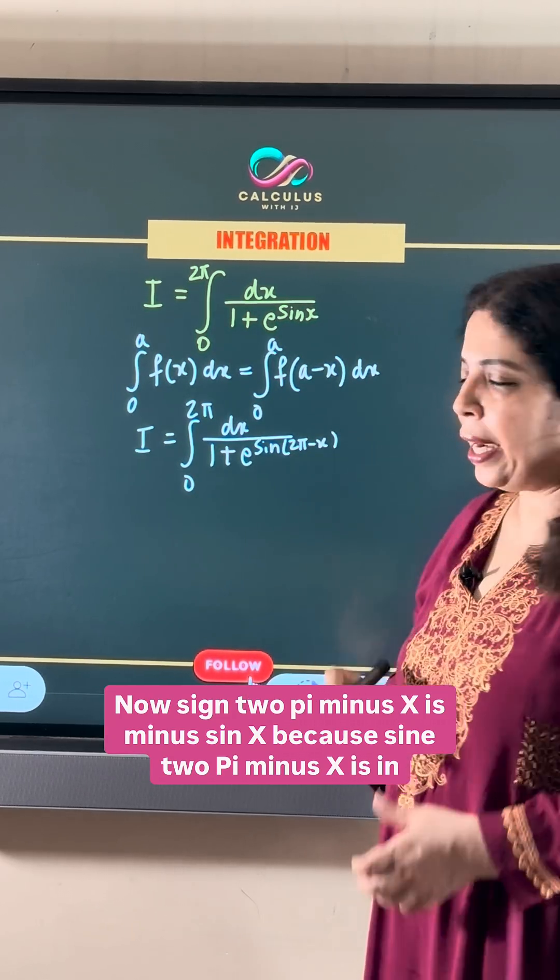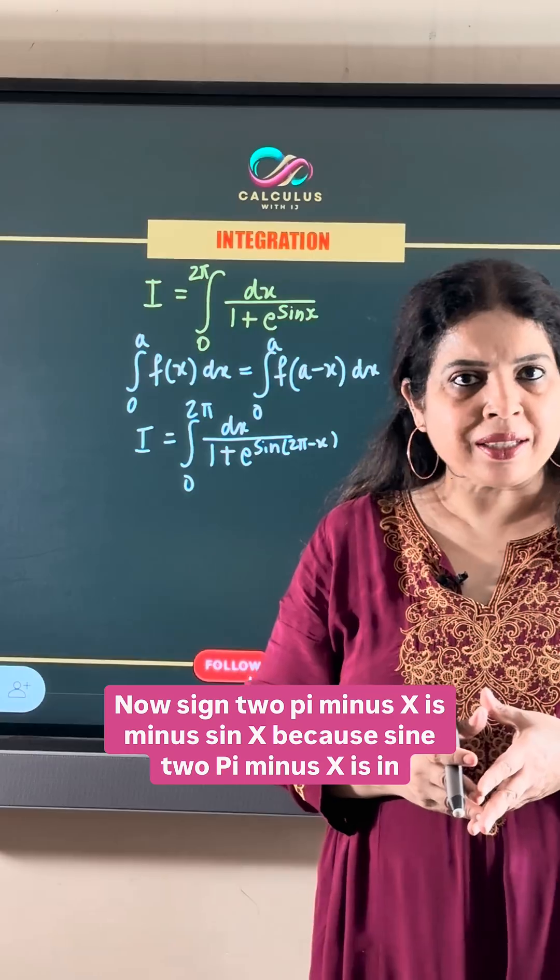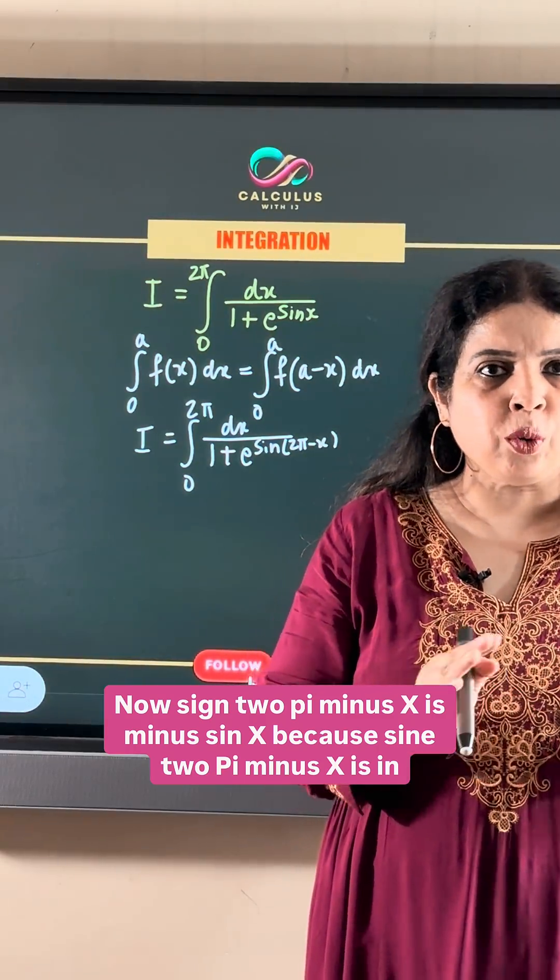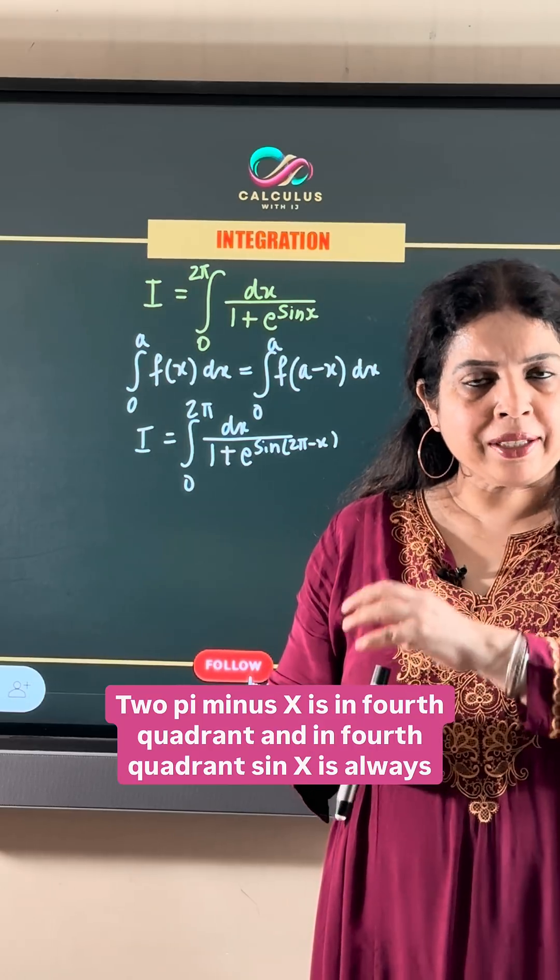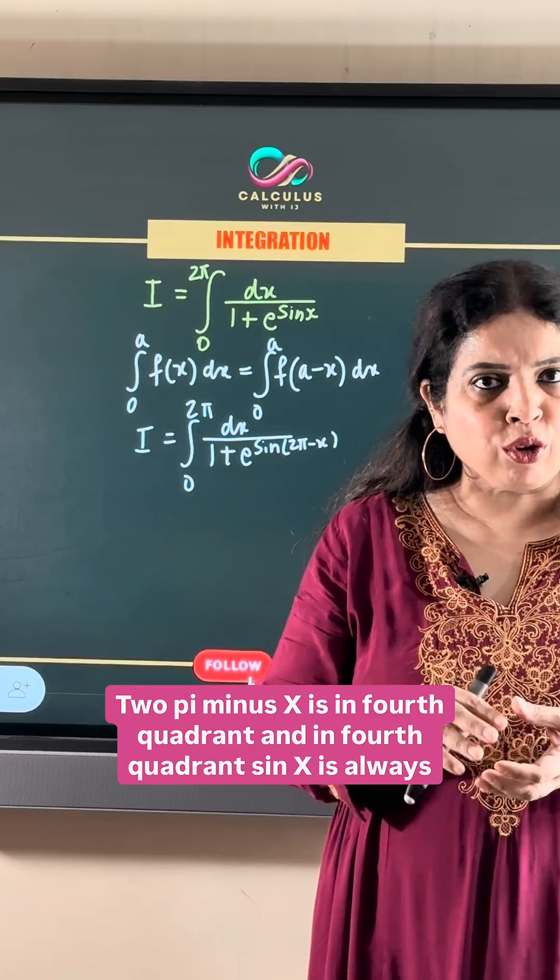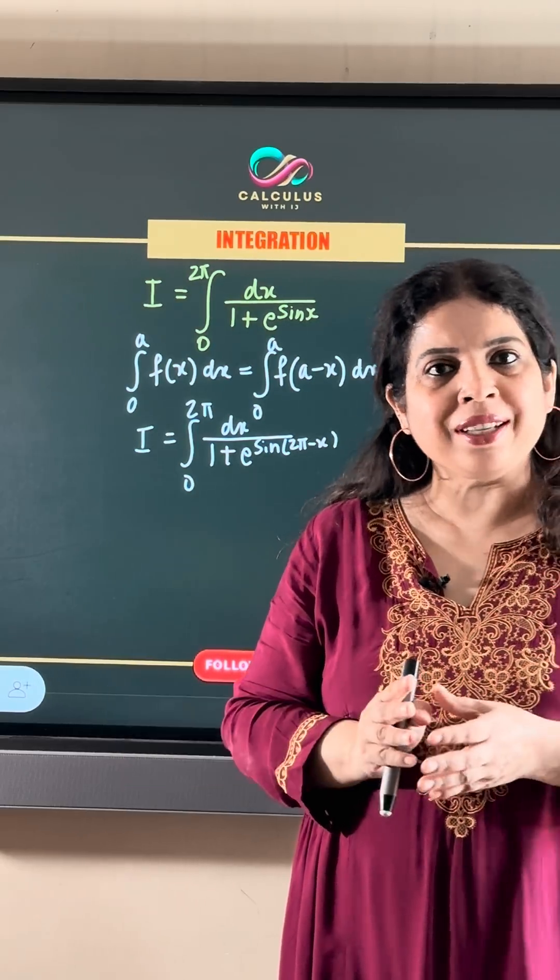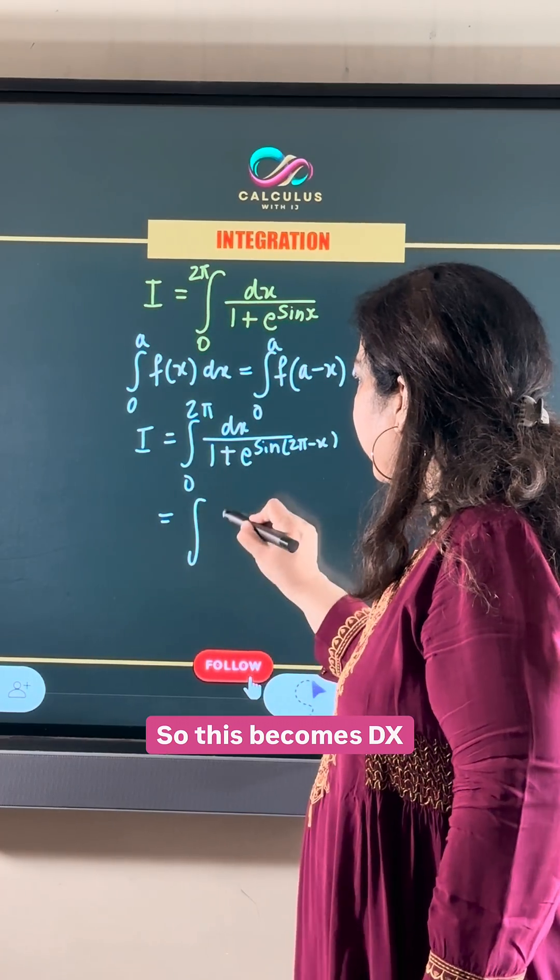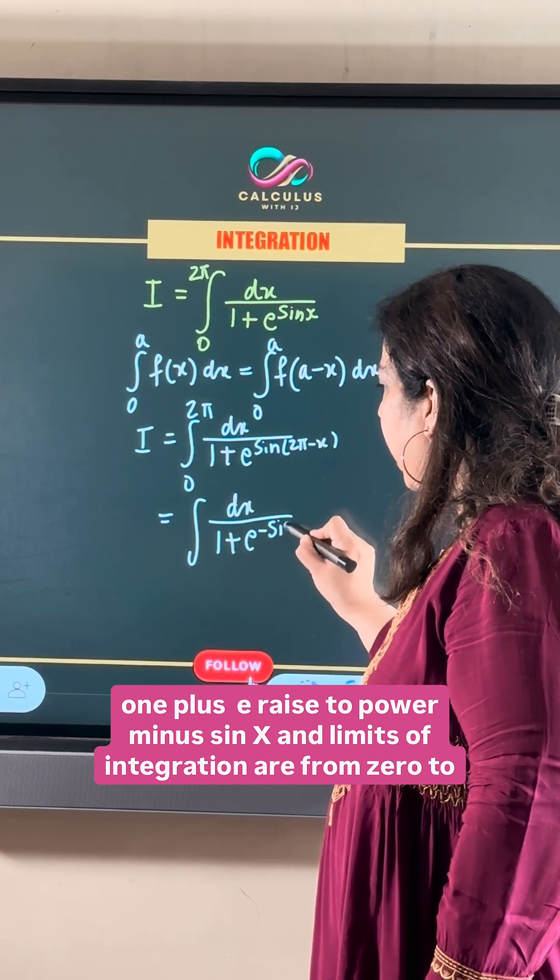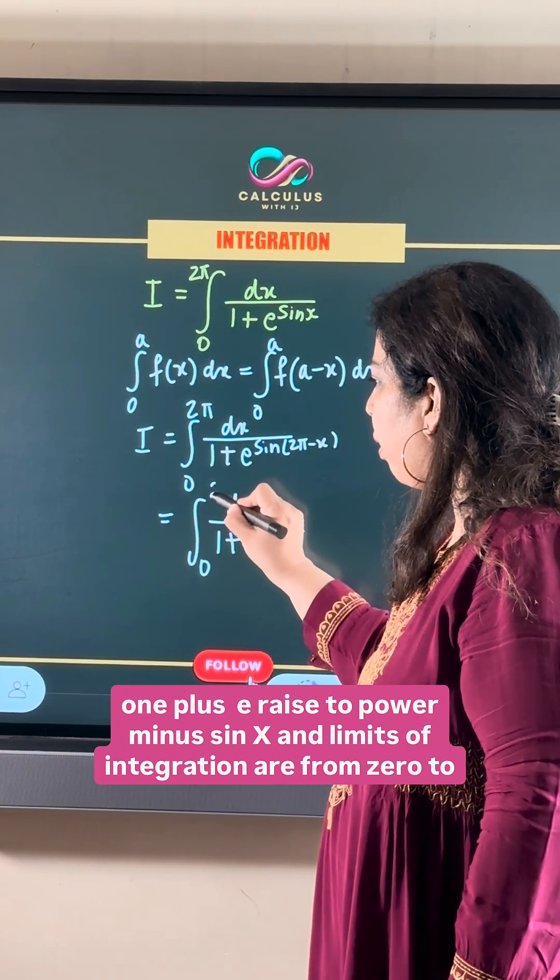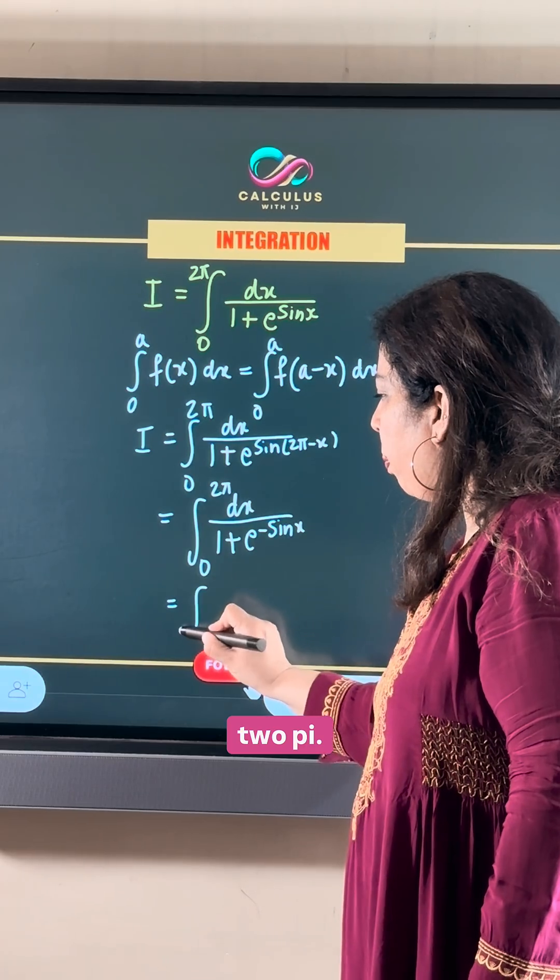Now sin(2π minus x) is minus sin x because sin(2π minus x) is in the fourth quadrant. 2π minus x is in the fourth quadrant, and in the fourth quadrant sin x is always negative. So this becomes dx over 1 plus e raised to power minus sin x, and limits of integration are from 0 to 2π.